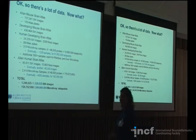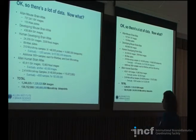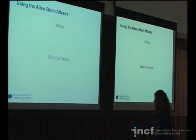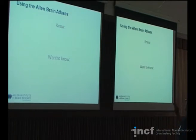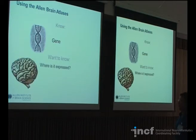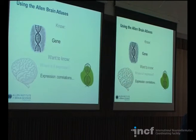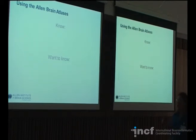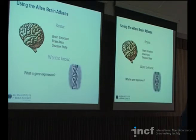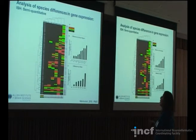Besides potentially crashing your computer, there are a couple of approaches to the data. Either you know a gene and want to know where it's expressed in the brain or what genes correlate with its expression level. Or you know your structure of interest or disease state and want to know what genes are preferentially expressed in that area or are not expressed at all. Here are some use case scenarios for analyses done inside the institute.